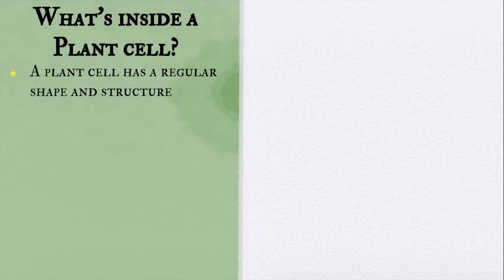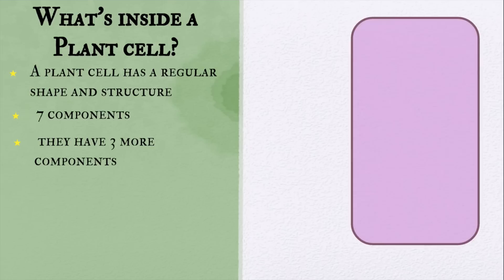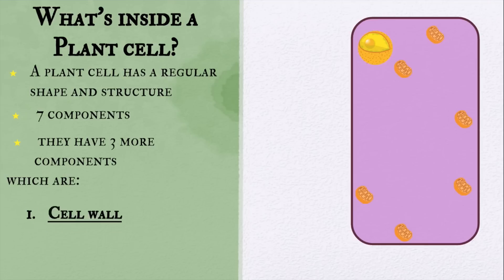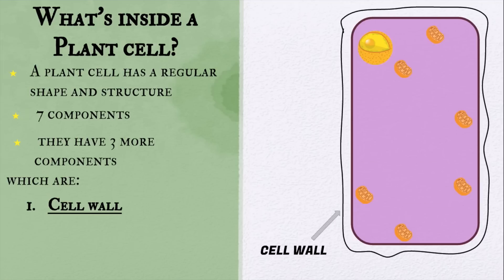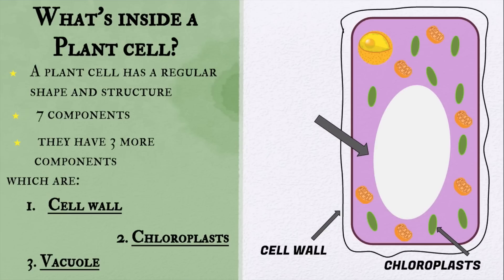Pause this video and see how many main components a plant cell has. And we're back — the answer is seven main components. Plant cells do have the nucleus, mitochondria, cytoplasm, and cell membrane, but they have three additional components. The first extra component is the cell wall, shown here. The second is the chloroplast — these are all the chloroplasts. And third, we have the vacuole, shown right here.